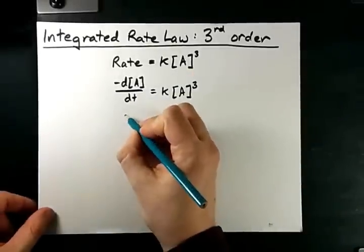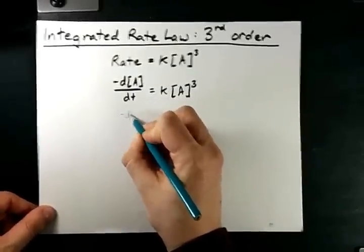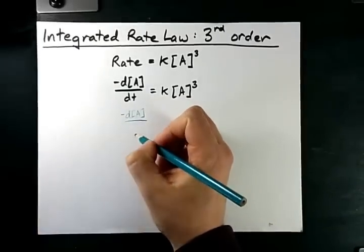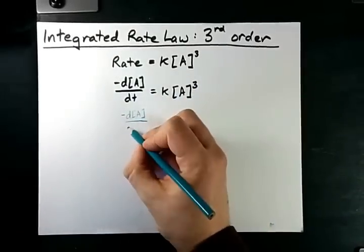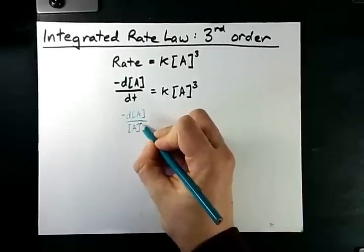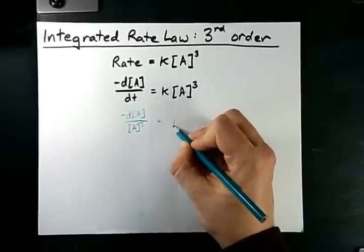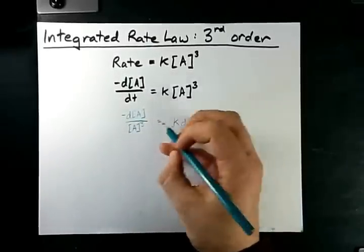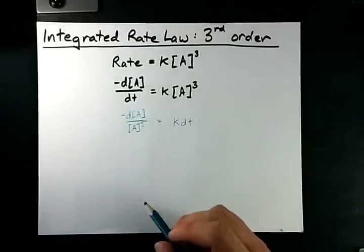The way that we do that is to separate our variables. That means move the [A] cubed over to this side and move the dt over to this side. Can you see that? Yes, you can.